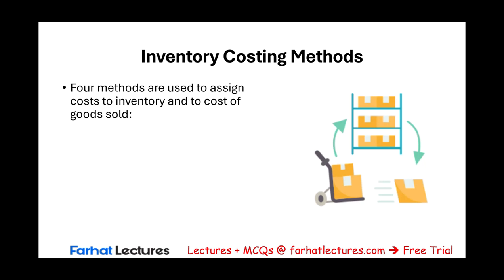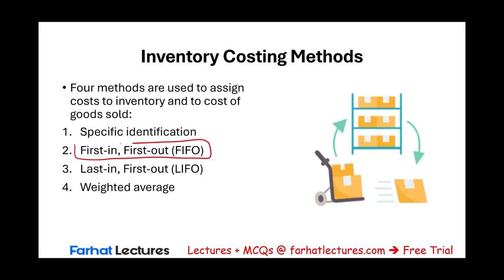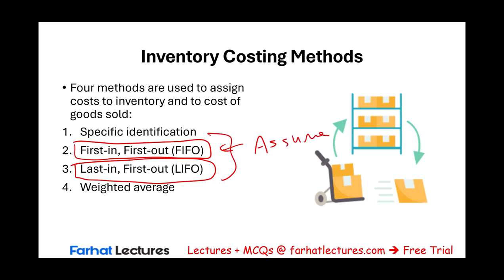Companies can assume the calculators purchased first are sold first — first in, first out. Or they can assume last in, first out — the opposite: the last units purchased are the first units sold. Or they can compute a weighted average cost per unit and use that. Or they can track each calculator separately using specific identification. There is more than one method to cost your inventory because the amount assigned to inventory influences the amount assigned to cost of goods sold.